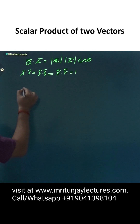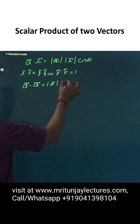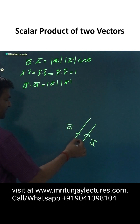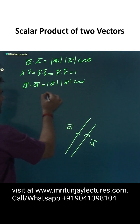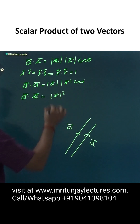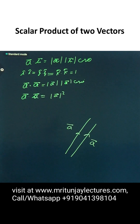If anyone asks, what about a dot a? This is written as mod a into mod a, with angle between them being 0, so cos 0. It means a dot a is written as mod a to the whole square. If two same vectors are dot-producted, the scalar product of same vector equals magnitude squared, or vector magnitude squared.